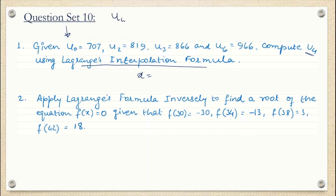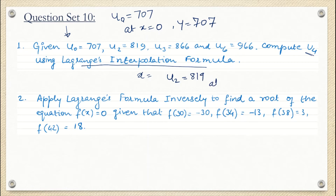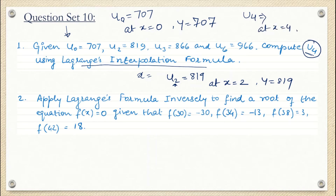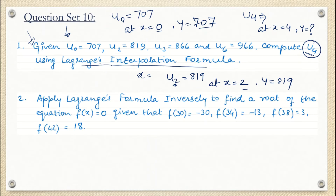If u-naught is 707, this means at x = 0, y = 707. Similarly, u2 = 819 means at x = 2, y = 819. They have given these values, and they are asking what is u4 — meaning at x = 4, what is the value of y? They could have given you this data in tabular form: x is 0 then y is 707, x is 2 then y is 819, and so on. So they are asking the same thing in a different way — at x = 4, we need to know the value of y.